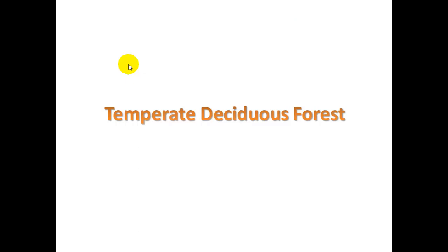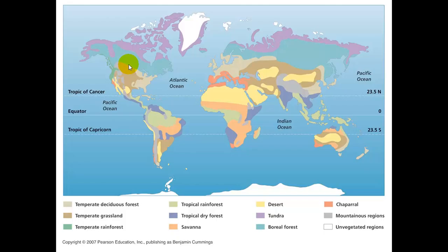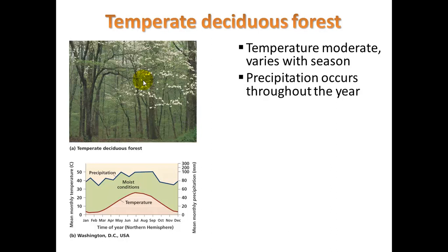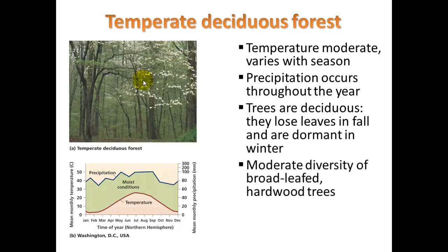As we move closer toward the equator, we get into the temperate deciduous forests — like where I grew up in Akron, Ohio, along the eastern seaboard. Temperature is moderate but varies with the season. Summers could be very hot and muggy — 90 to 100 degrees — and in the wintertime it would often get to single-digit temperatures. Precipitation occurs throughout the year. Trees are deciduous, meaning they lose their leaves in the fall and are dormant in winter. There's a moderate diversity of broad-leaved hardwood trees: oak, maple, poplar — lots of good trees for lumber. This is seen in North America, Europe, and China.